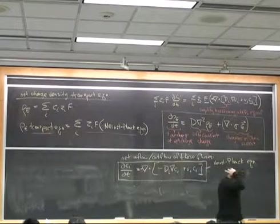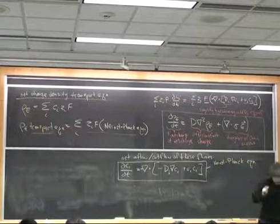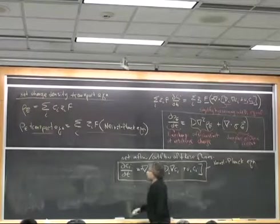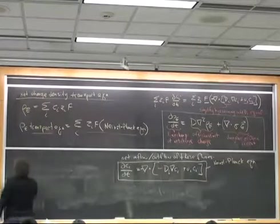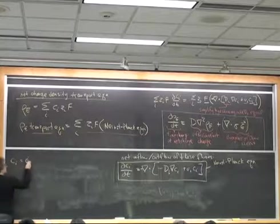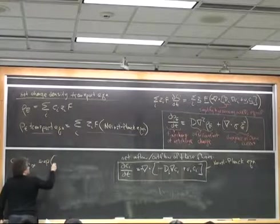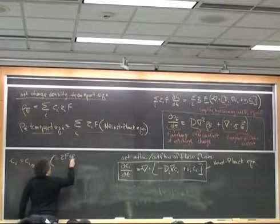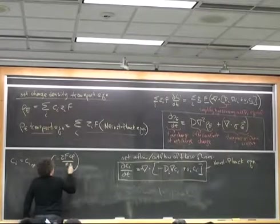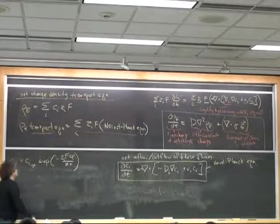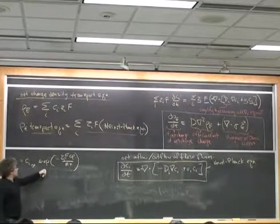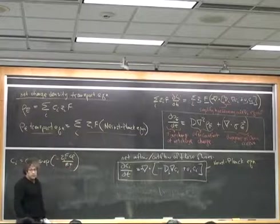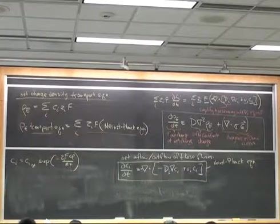Recall, when we solve for the equilibrium electrical double layer, we said that the concentration C was given by a bulk concentration times exponential. So we said that the local concentration was given by the bulk concentration times the exponential of an electrostatic potential energy normalized by RT.